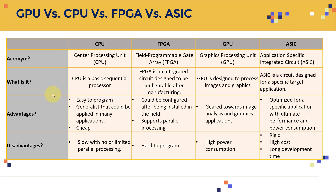For advantages: CPUs are easy to program, generalist, and relatively cheap. FPGAs can be configured after installation and support parallel processing. GPUs are geared toward image analysis and graphics applications. ASICs offer highly optimized hardware for a specific application with ultimate performance and power efficiency — for example, an ASIC designed only for deep learning training can deliver extreme performance for that specific task.